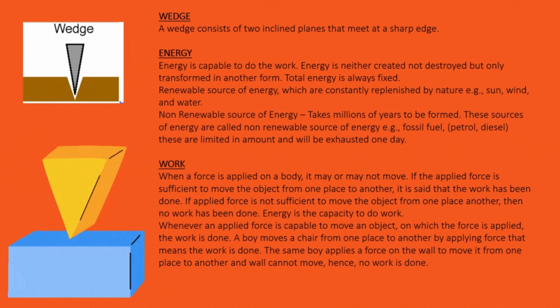Work: When a force is applied on a body, it may or may not move. If the applied force is sufficient to move the object from one place to another, it is said that the work has been done. If applied force is not sufficient to move the object from one place to another, then no work has been done. Energy is the capacity to do work. Whenever an applied force is capable to move an object on which the force is applied, the work is done. A boy moves a chair from one place to another by applying force, that means the work is done. The same boy applies a force on the wall to move it from one place to another and the wall cannot move, hence no work is done.